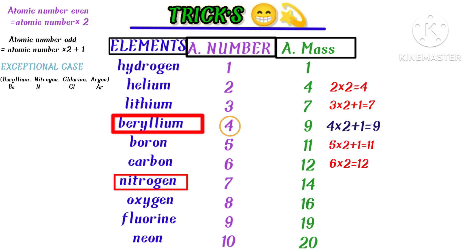The next exceptional case is nitrogen. Nitrogen has atomic number 7, which is odd — but here we reverse the trick and apply the even rule: 7 × 2 = 14. So the atomic mass of nitrogen is 14.